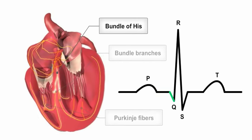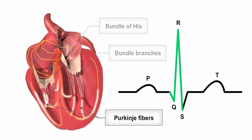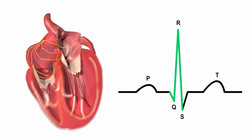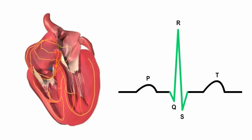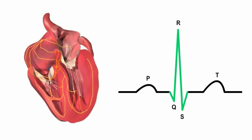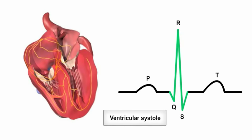It enters the bundle of His and spreads through the bundle branches and the large diameter Purkinje fibers along the ventricle walls. As the signal spreads through the ventricles, the contractile fibers depolarize and contract very rapidly, inducing ventricular systole.